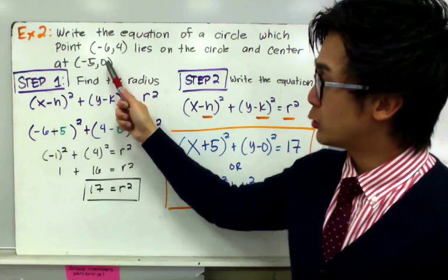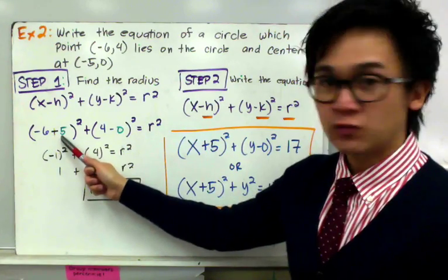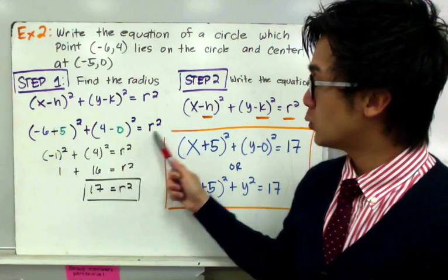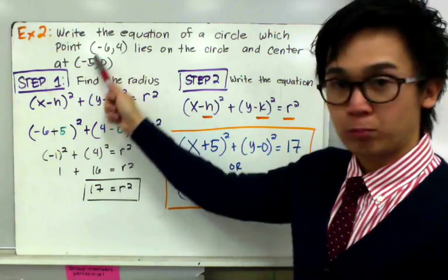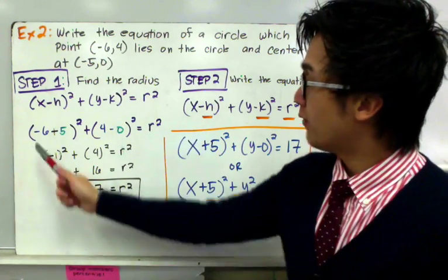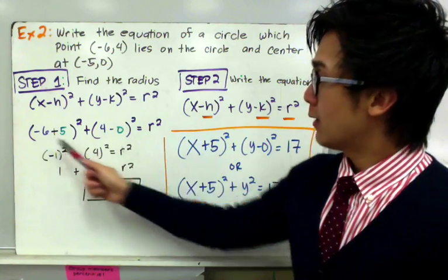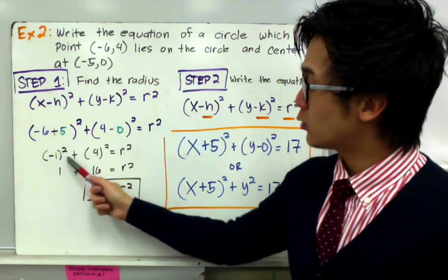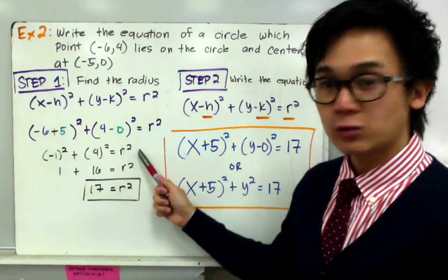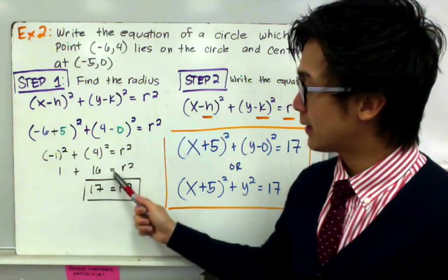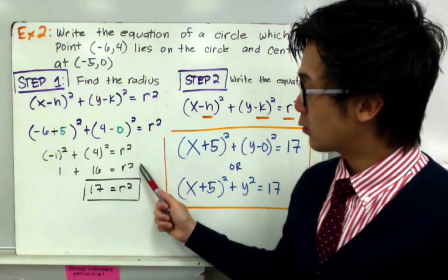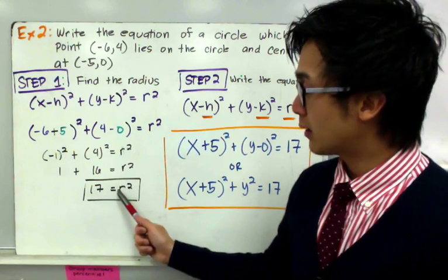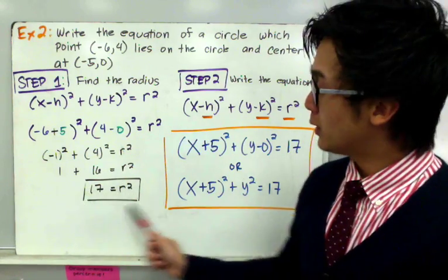By direct substitution: (−6 + 5)² + (4 − 0)² = r². Simplifying: (−1)² + 4² = r², which gives 1 + 16 = r².